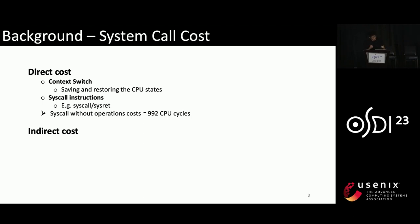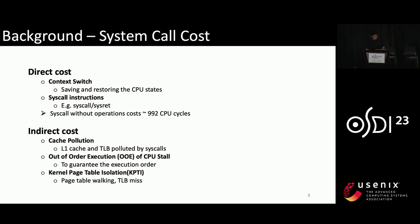Direct cost includes mode switch and syscall instructions. By testing on our Intel Skylake CPU with Linux, we found that a syscall without operations costs about 1,000 CPU cycles, which is the direct cost. For indirect cost, L1 and TLB caches could be polluted by syscalls and out-of-order execution of the CPU must stall to guarantee execution order. Recently, the security mechanism KPTI for Meltdown defense also introduces indirect cost due to page table switching and TLB misses.